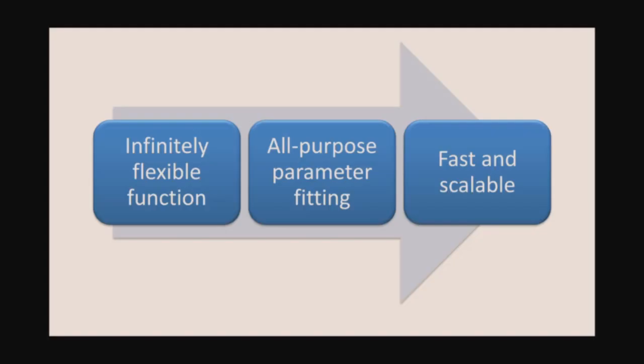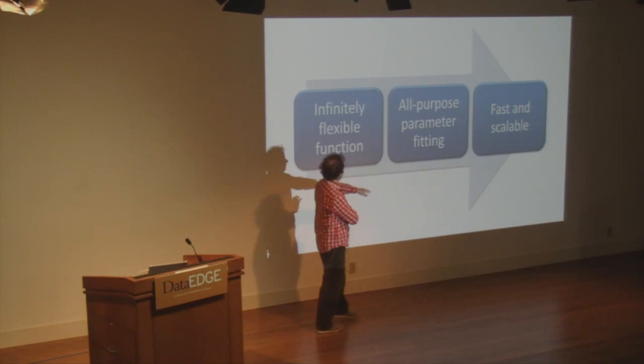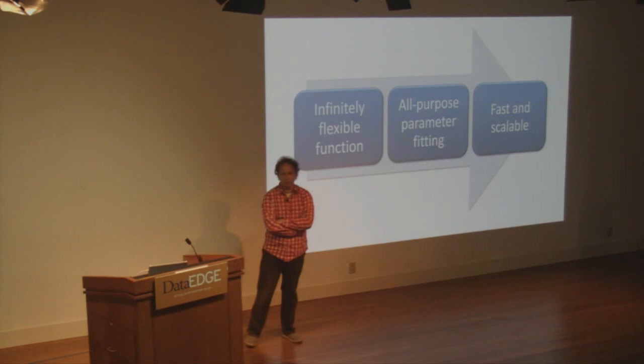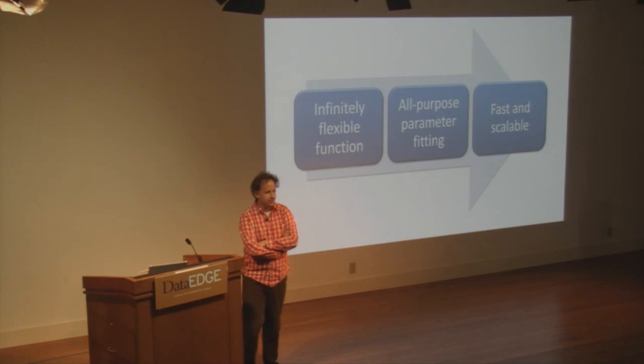Let's start by talking about the big goal. The big goal, back from 1954 when Arthur Samuel first invented machine learning, was this idea that we could get computers to solve problems for us if we just gave them examples of what we want — a way of having machines learn that is as flexible as possible. Ideally, an infinitely flexible function that could learn anything at all, and some way of fitting those functions to given inputs in a fast and scalable way. That was always the goal of people in machine learning.